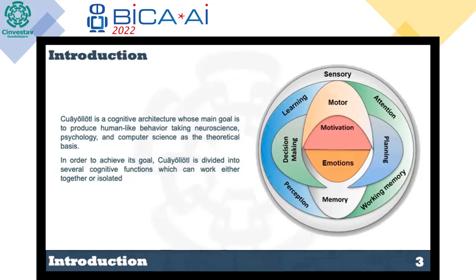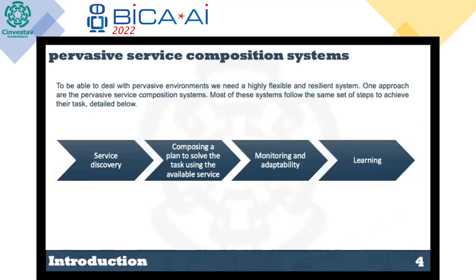In order to achieve this goal, we've divided the architecture into several cognitive functions, which can work together or in isolation. Some of those are shown in the diagram on the right. Now, the pervasive system composition systems.